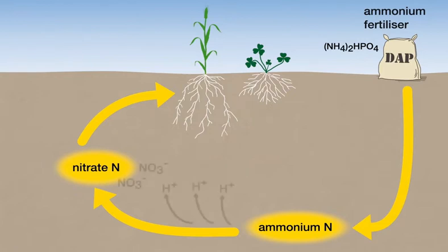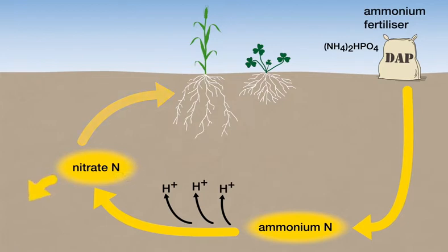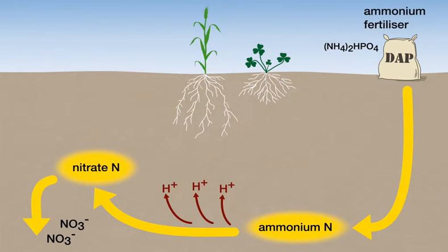Nitrate ions are readily leached away from the root zone in most southwestern agricultural soils. If the nitrate leaches and is not taken up, all three hydrogen ions remain in the soil, contributing to soil acidity.